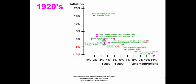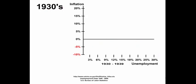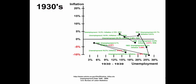We are then going to show you the trend line. Notice there is an inverse relationship between inflation and unemployment — as unemployment goes down, inflation goes up. Let's look at the 30s. Notice there is a trade-off between unemployment and inflation.